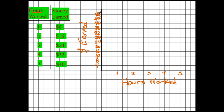So for hours worked: if I work one hour I get paid eight dollars, so I plot one and eight. If I work two hours I make sixteen dollars. If I work three hours I make twenty-four dollars. If I work four hours I make thirty-two. And if I work five hours I make forty dollars — so that's thirty-two and forty.